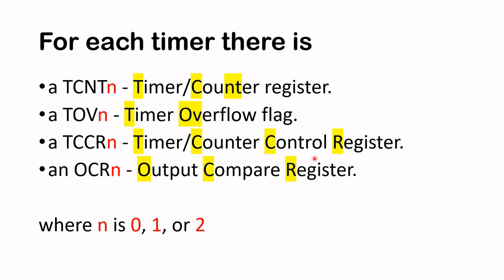For each timer, whether 8-bit or 16-bit, there will be a timer counter register (TCNT), a timer overflow flag (TOV), a timer counter control register (TCCR), and an output compare register (OCR). The 'N' in each register name is an integer — 0, 1, or 2 — corresponding to each timer.